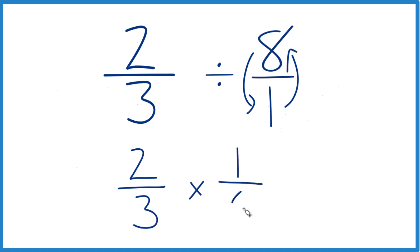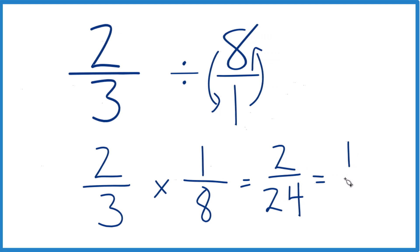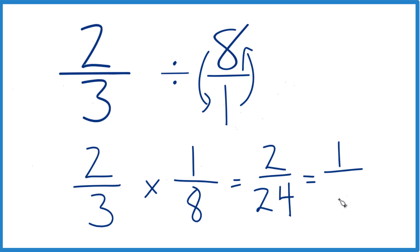So we're multiplying two-thirds times one-eighth. Multiply the numerators: two times one gives us two. Then with fractions we multiply the denominators: three times eight is 24. So two-thirds divided by eight is two twenty-fourths, but we can simplify that because these are even numbers. Let's divide both by two — two divided by two is one.